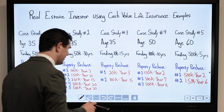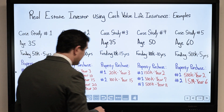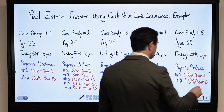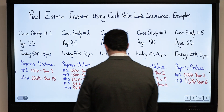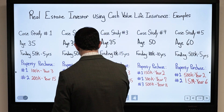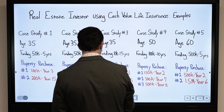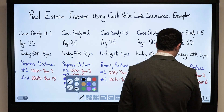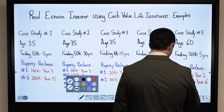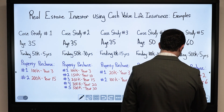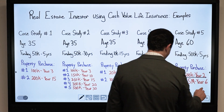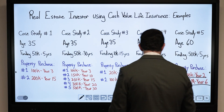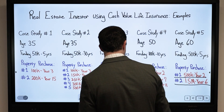What we're going to look at here is $500,000 per year over 5 years — $2.5 million in total going into the policy — and then 2 purchases: one $500,000 coming out in year 2 and then $1.5 million in year 6.